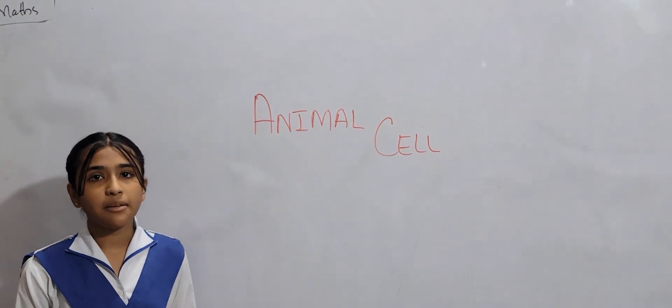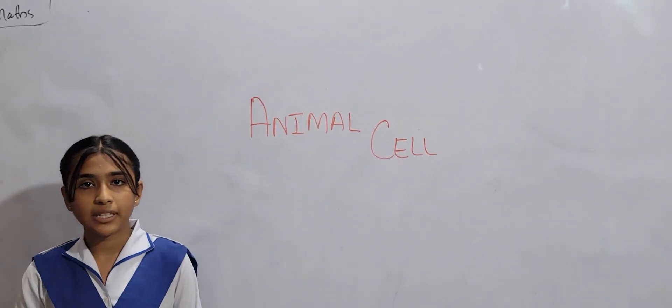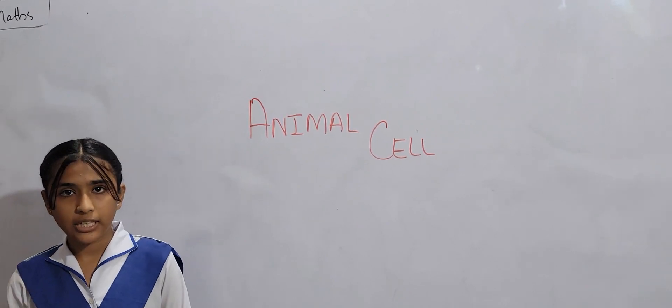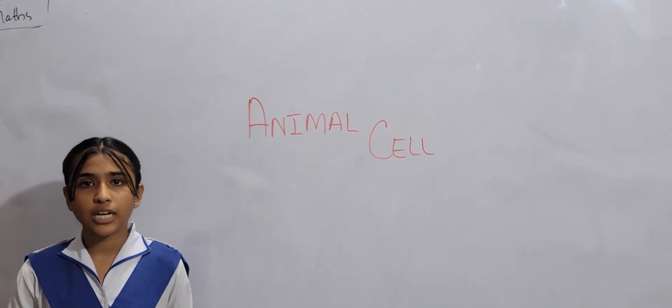In animal cell, there is a cell membrane. The cell membrane is semi-permeable.